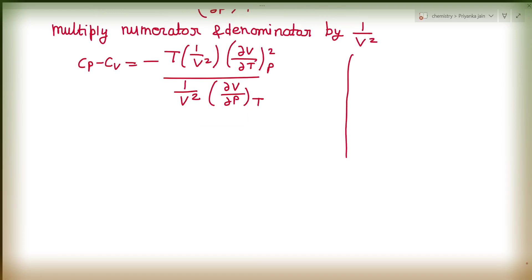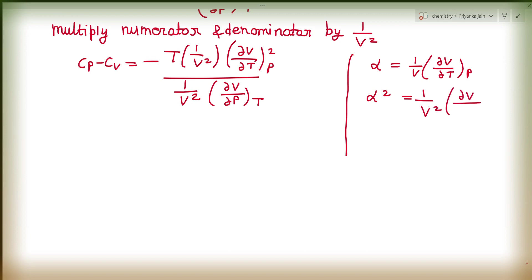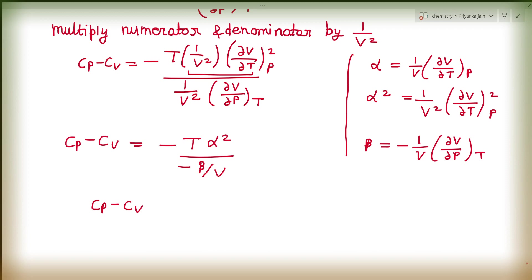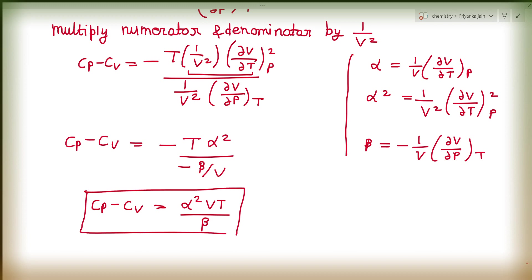We know that alpha equals (1/V)(∂V/∂T) at constant P, so alpha squared equals (1/V²)(∂V/∂T)² at constant P. Similarly, beta equals minus (1/V)(∂V/∂P) at constant T. Substituting these definitions, we get the important result: CP minus CV equals alpha squared times V times T divided by beta. This is one of the very important relationships between CP and CV in terms of alpha and beta.